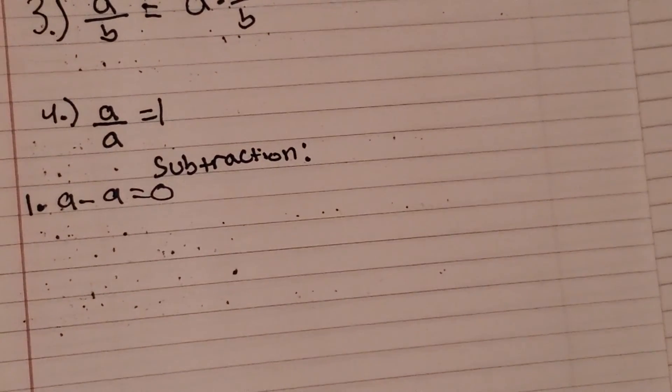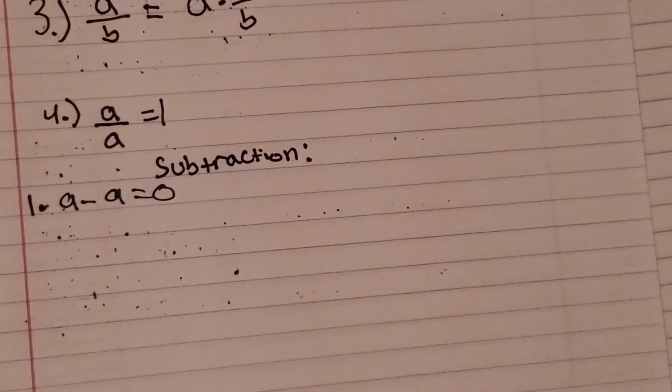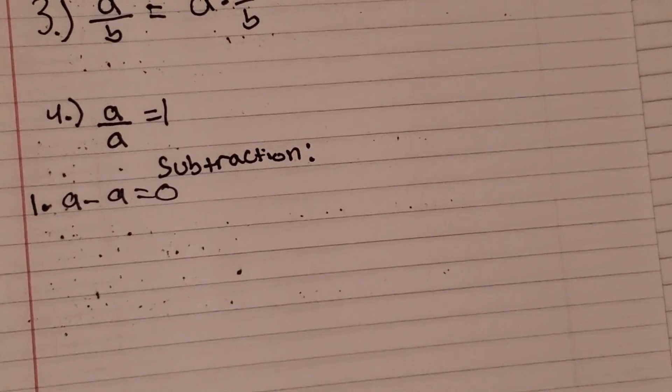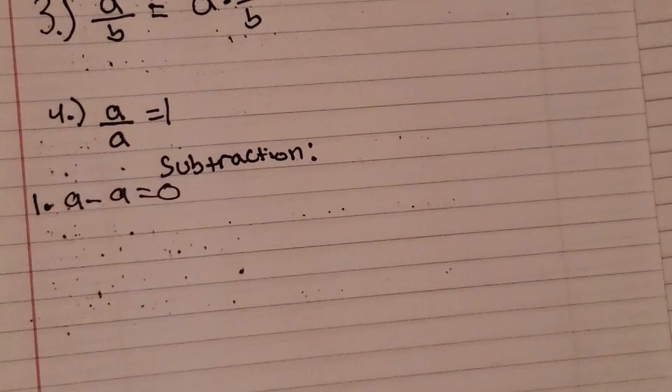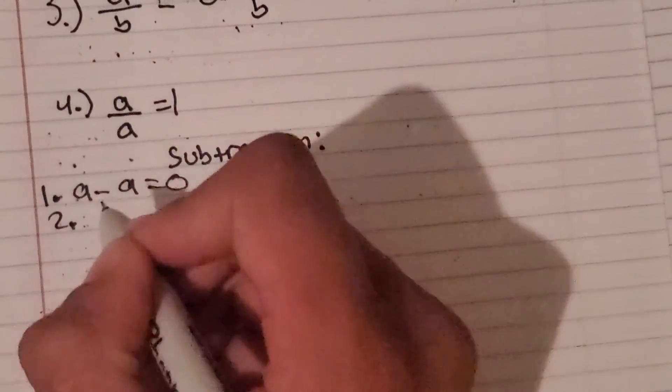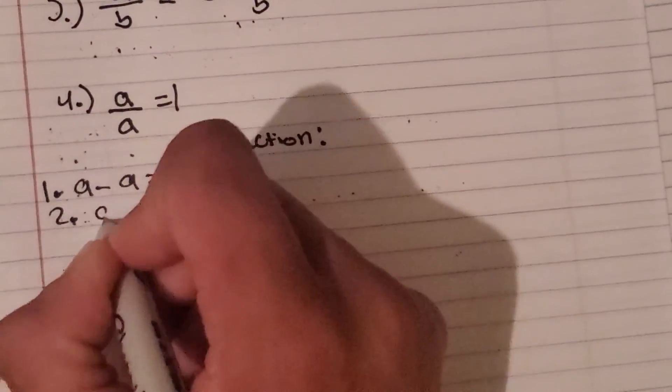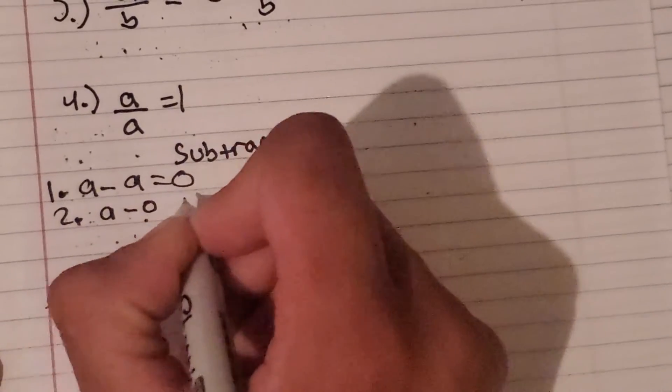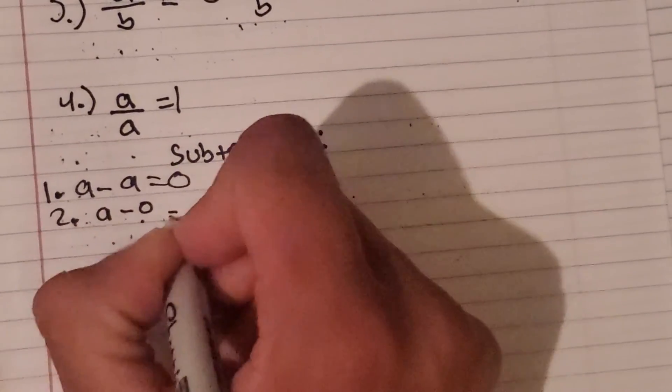Keep in mind, we're not proving any of these — these would take forever to prove. If you guys would like to see the proofs, let me know in the comments — that'd be a cool video idea. The second subtraction property: A minus 0 equals A.